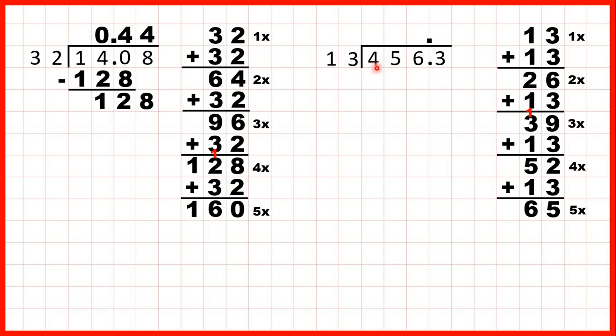Taking the first two digits, we have 45 divided by 13. So we need to find a number in the 13 times table that's as close to 45 as possible, but not more than 45. 39 is the closest number that's still less than 45. So we can write 39 underneath the 45. And because that's 3 times, we can write 3 in our answer line.